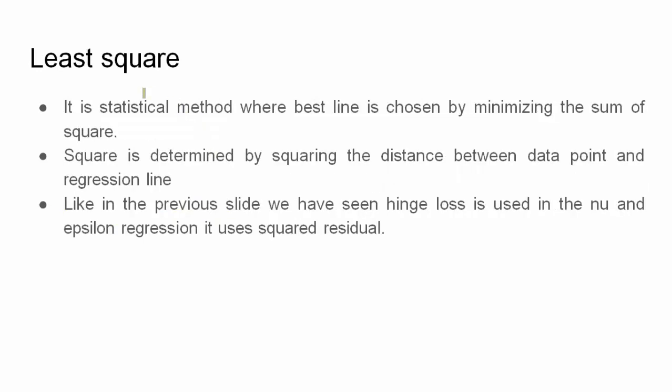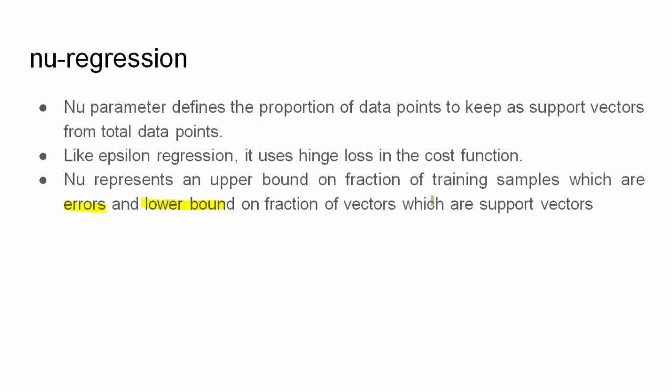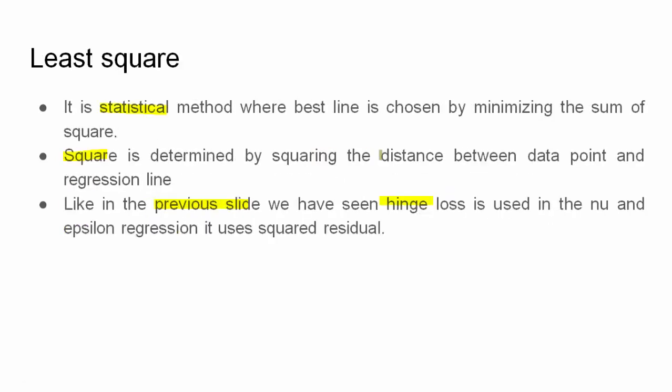Least square is a statistical method which depends on the sum of squares. The aim and reason of this particular type of regression model is to minimize the sum of squares. The square is basically squaring the distance between the data point and the regression line. We need to optimize that regression line by minimizing the sum of squares. Like in the previous slide, we have seen that hinge function is used, but here in least square, squared residual is used in the cost function.